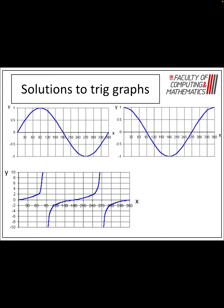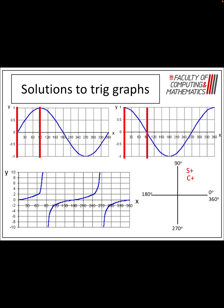What we're going to do is look at what happens to the graphs in each quadrant — whether it's positive or whether it's negative. We're going to go up in increments of 90 degrees. In that first quadrant, between 0 and 90 degrees, sine is positive, your cosine wave is positive, and your tan wave is positive as well. So all three graphs are positive between 0 and 90 degrees and will give you positive answers.